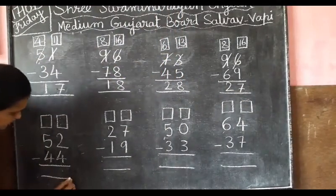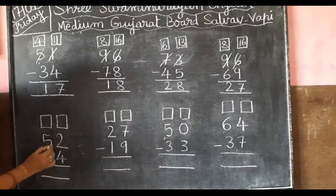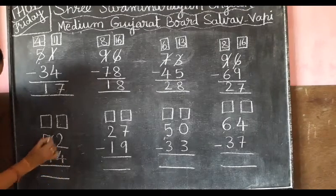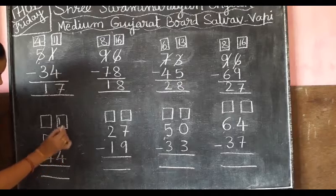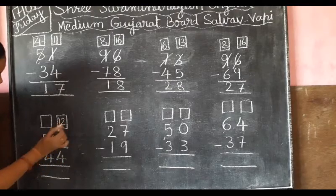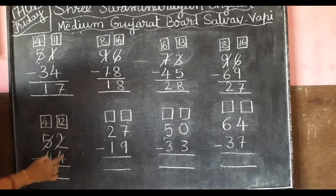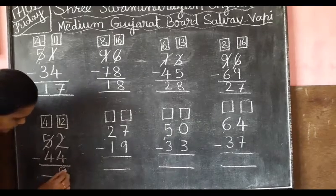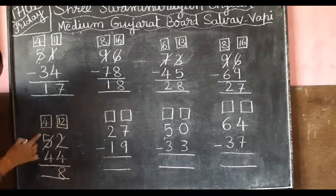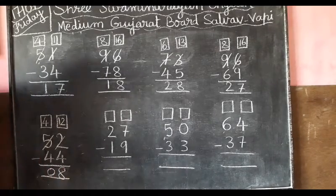Next is 2. We can't cut 2, so we have to borrow — 2 here. We have to take 4. 2 borrow. 4, 8. Then 4 minus 4 equals 0.